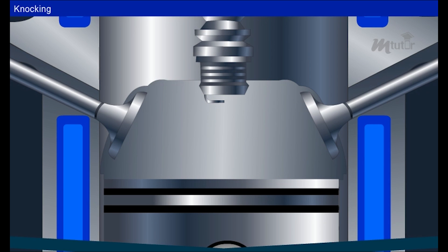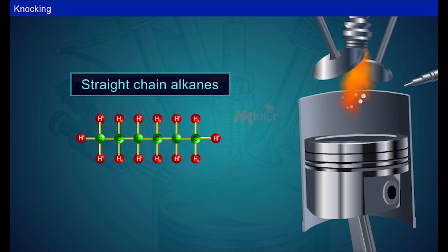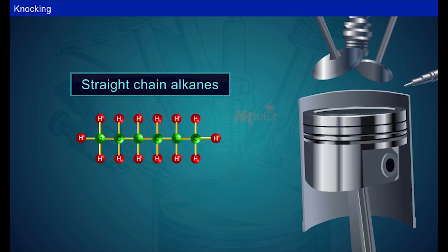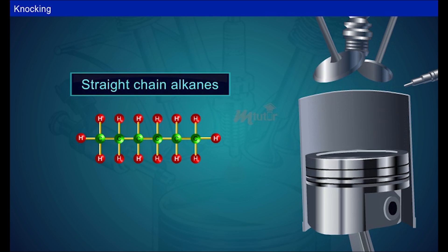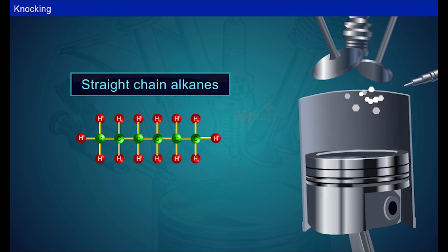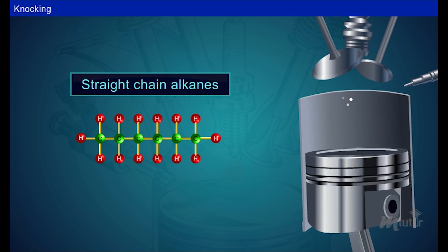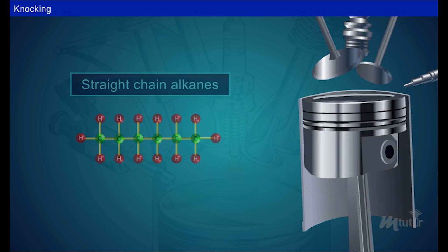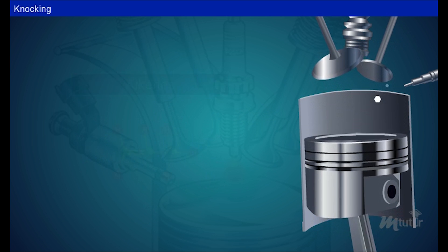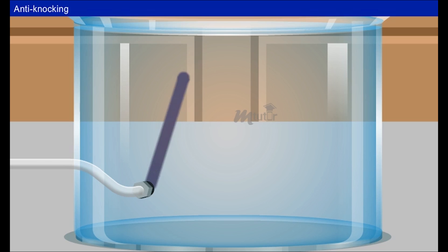Chemical structure and knocking: the knocking tendency of the gasoline depends upon the nature and molecular structure of the hydrocarbons present in the gasoline. The knocking property decreases in the following order: straight-chain alkanes, branched-chain alkanes, alkenes, aromatics.